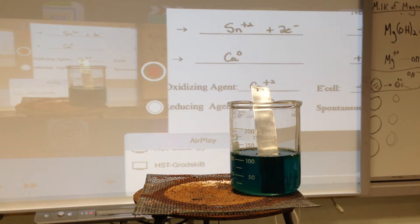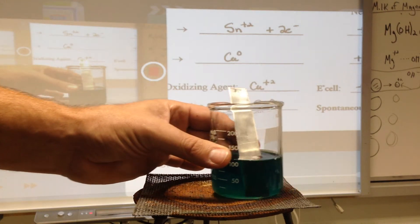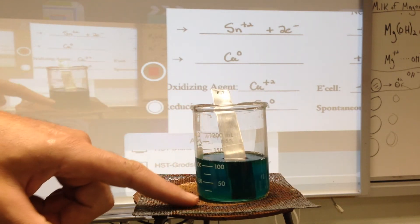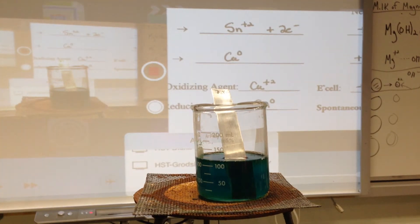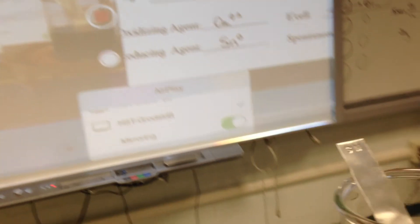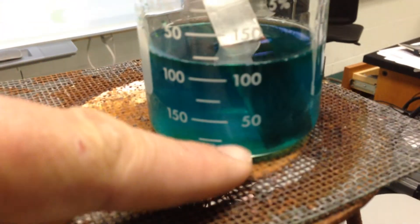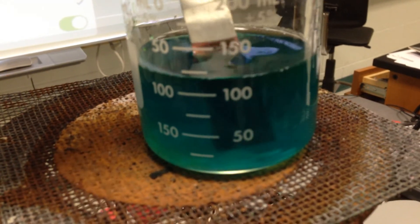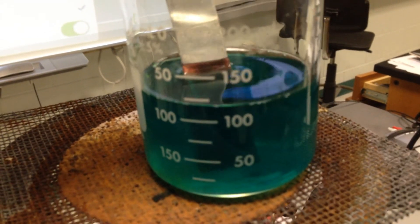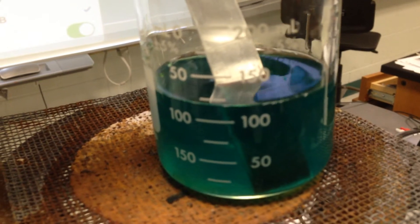you notice the tin ions are not soluble. They make a milky-white solution. Over time, what we should be seeing at the bottom of this beaker is a buildup of white. On the bottom here, you see a buildup of this white substance. That is the tin plus two ions that are appearing.